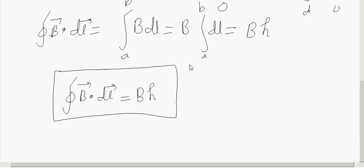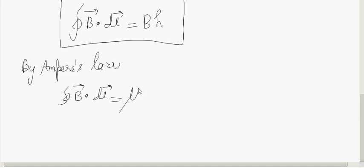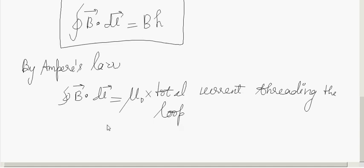Now, we will apply Ampere's law, Ampere's circuital law. Line integral of B dot dL is equal to μ₀ times the total current threading the loop. I can write it as μ₀ into current enclosed IE, where IE is the current enclosed in the solenoid loop.